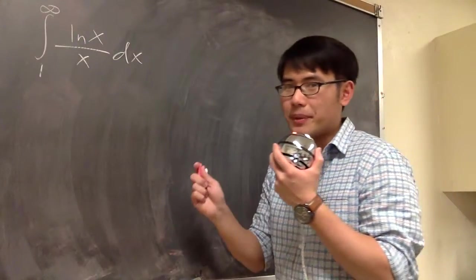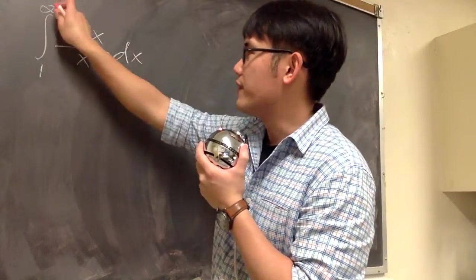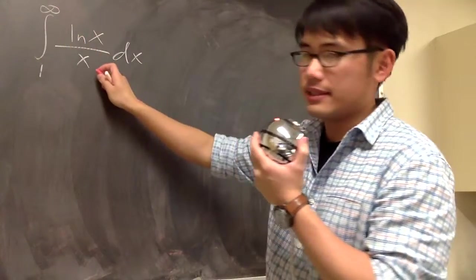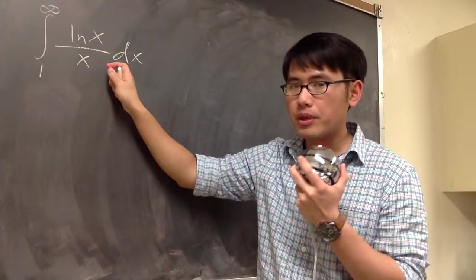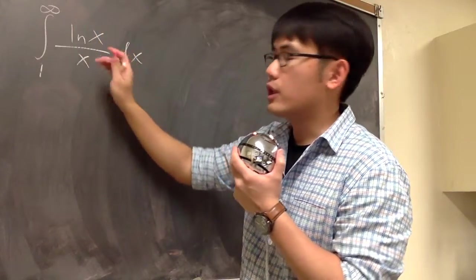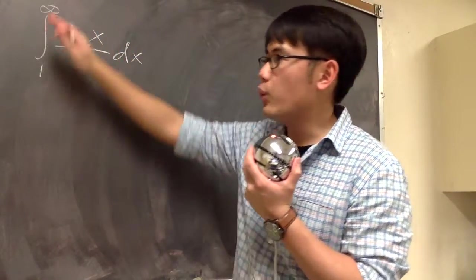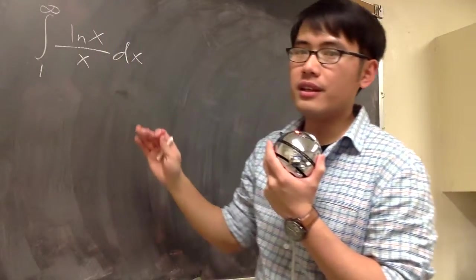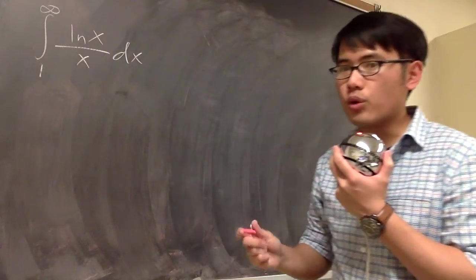We will take care of this improper integral, the integral from 1 to infinity of ln x over x. This integral is improper because we have this infinity right here. Notice that ln x over x, we do not have vertical asymptote anywhere from 1 to infinity. So this is the improper integral of type 1.